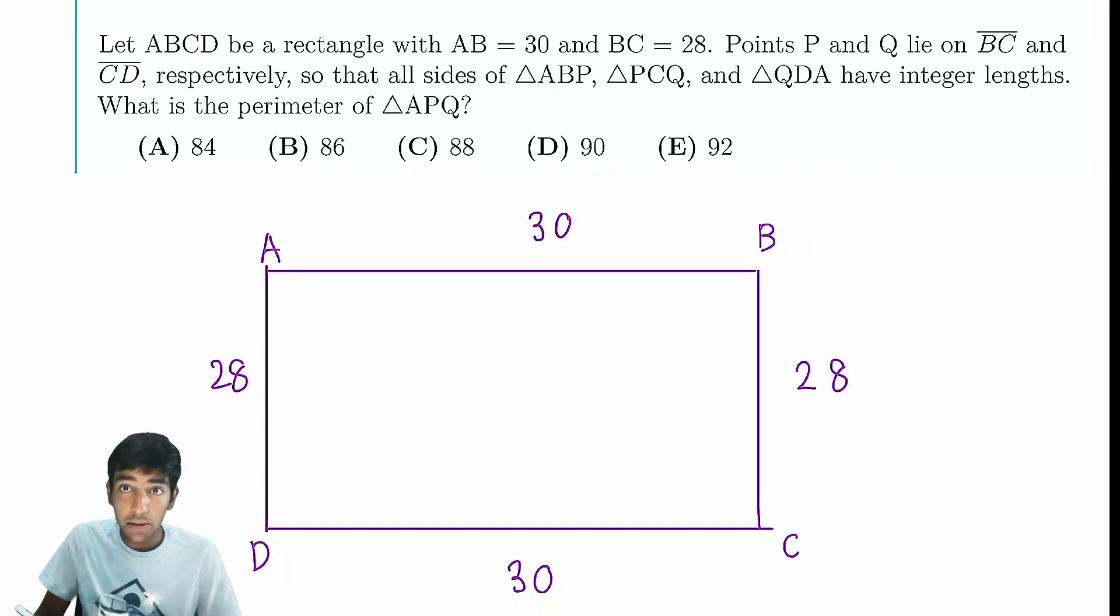So P is a point on BC and Q is on CD. We have that triangle ABP has integer sides, PCQ has integer sides, and QDA has integer sides as well.